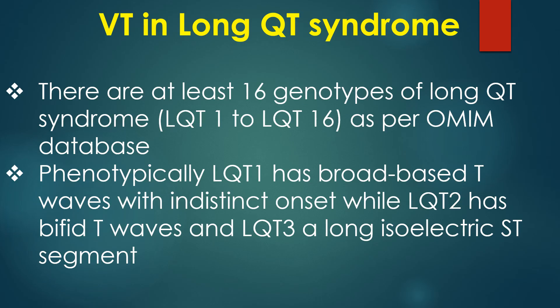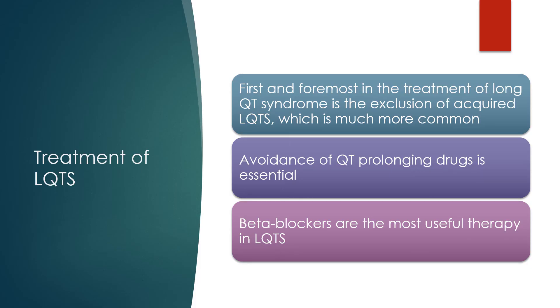There are at least 16 genotypes of long QT syndrome as per the OMIM database. Phenotypically, LQT1 has broad-based T waves with indistinct onset, while LQT2 has bifid T waves and LQT3 has a long isoelectric ST segment. First and foremost in the treatment of long QT syndrome is the exclusion of acquired LQTS, which is much more common.